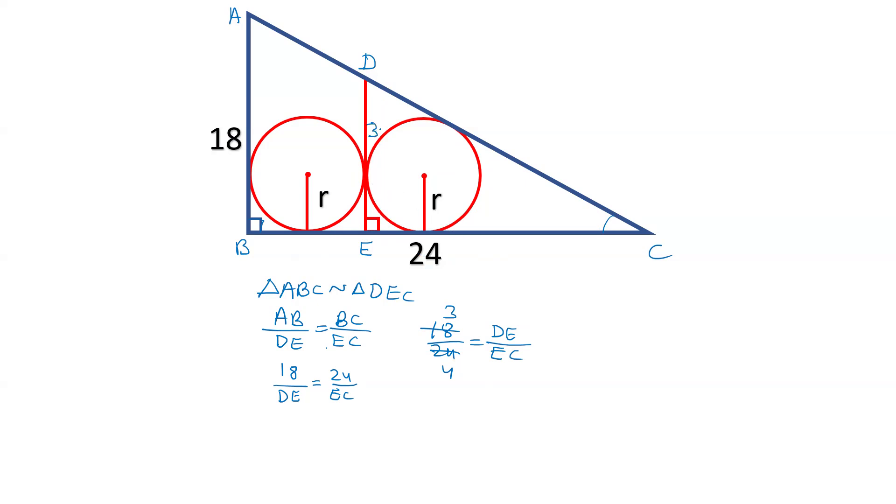Let's write down DE as 3x. I'm writing this side DE as 3x and this side as 4x. EC is 4x. So by Pythagoras theorem, DC will be 5x.